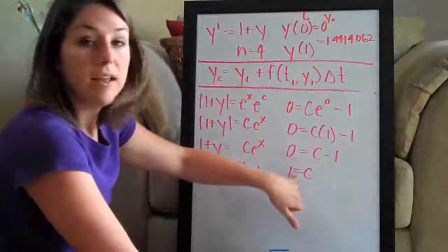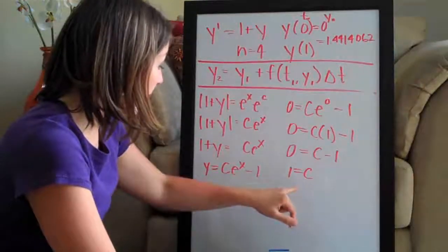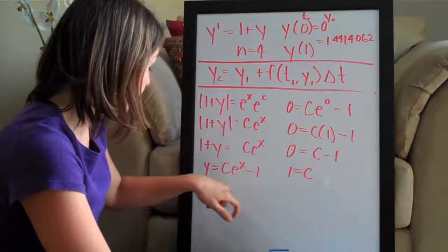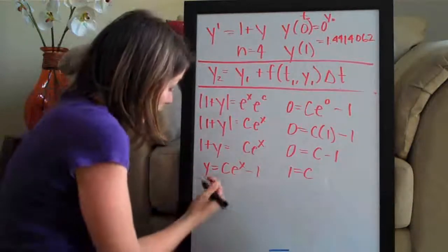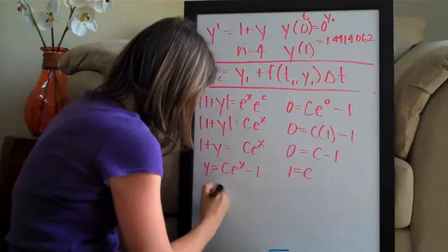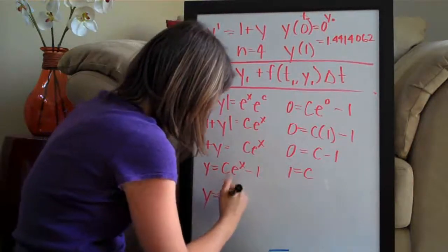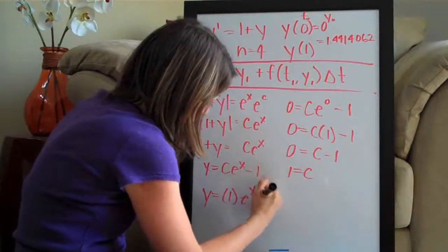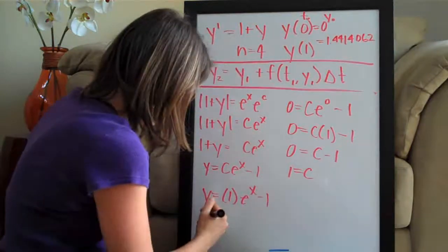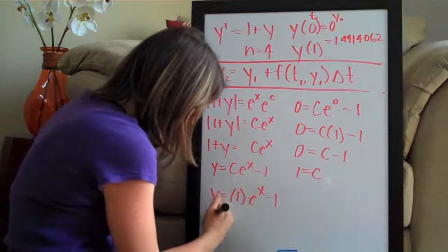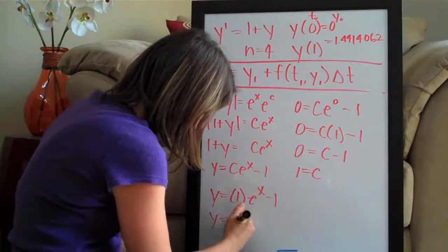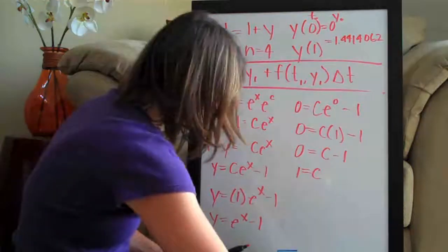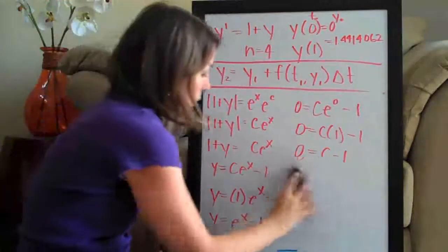So that is how we solve for c and now what we want to do is plug 1 back in for c to our original equation. So our function here is going to end up being y equals, we plug in 1 for c, e to the x minus 1 which of course is just going to be y equals e to the x minus 1.